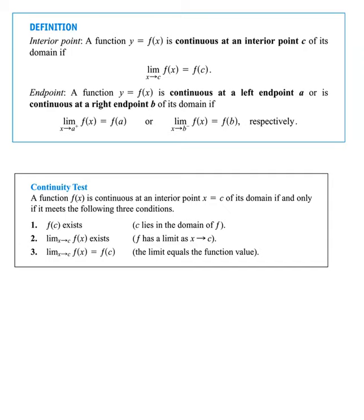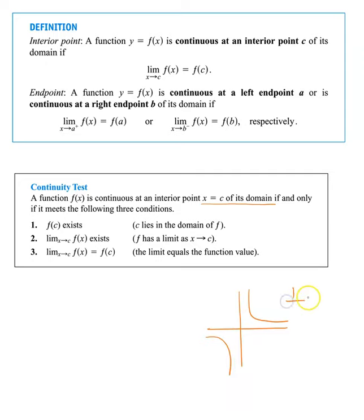The word 'domain' is important here — you can't look outside the domain and say it's not continuous. A good example is the rational function y = 1/x. If you see there is a discontinuity — a break at zero — you might say it's not continuous. But looking at the definition closely, it says it is continuous at an interior point of its domain.